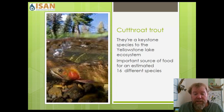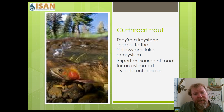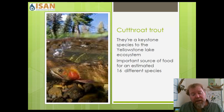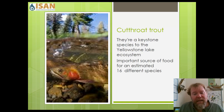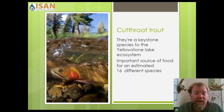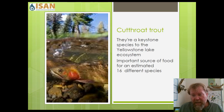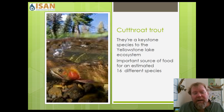Cutthroat trout are an important food source for 16 different animal species. One example is grizzly bears — when they come out of the den, they first feed on animals that died over winter, then on grasses, roots, young bison, and young elk. Around the same time, cutthroat trout in Yellowstone Lake migrate up into shallow tributaries, where they become an easy meal for bears, bobcats, wolves, mountain lions, black bears, wolverines, otters, and any meat-eating animal.